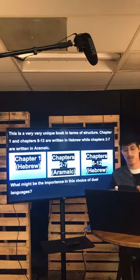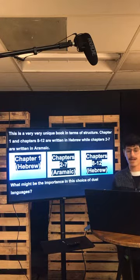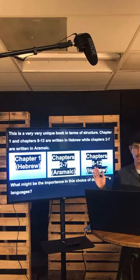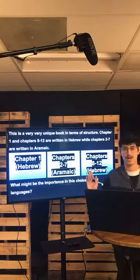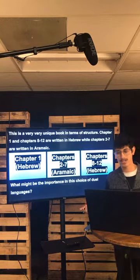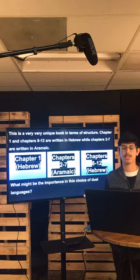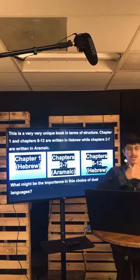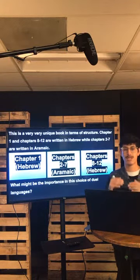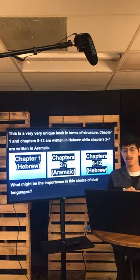This would be the last slide and then we'll go read the chapter. I just want to show you the format of this book. The book of Daniel is a very, very unique book in terms of structure — not just in the Bible, but books in general, novels and stories in general. Chapter one and chapters eight through twelve are written in Hebrew, while chapters two through seven — the middle chapters — are written in Aramaic.